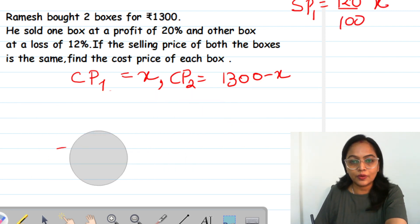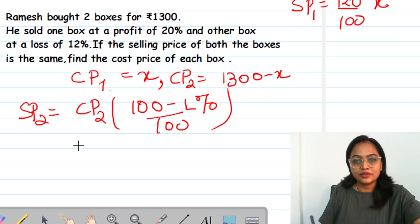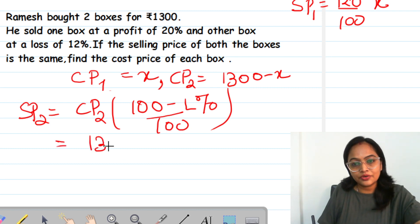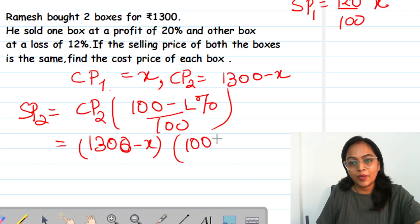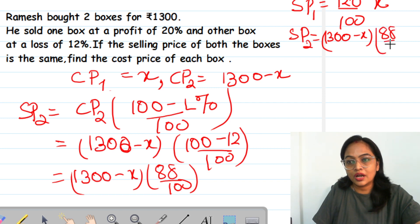Now I will find SP2. SP2 will be CP2, because there is a loss. Now it is 1300 minus X, 100 minus loss percentage is 12. So it is 1300 minus X with 88 upon 100. 100 minus 12 is 88. So my SP2 is 1300 minus X into 88 upon 100.